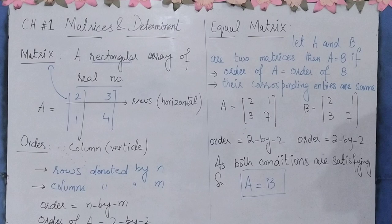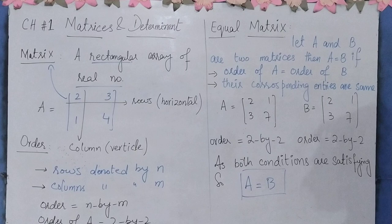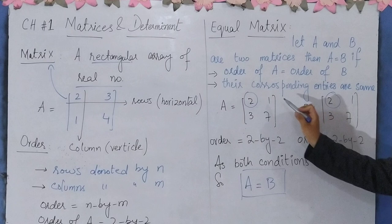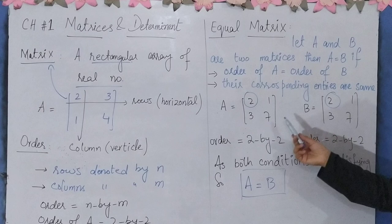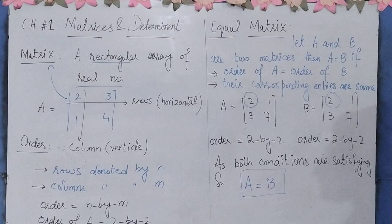Now the second condition: their corresponding entries are same. This means that the first row first element here equals the first row first element there. First row second element equals first row second element. Second row first element equals second row first element. Second row second element equals second row second element. If all elements are the same, the second condition is satisfied.